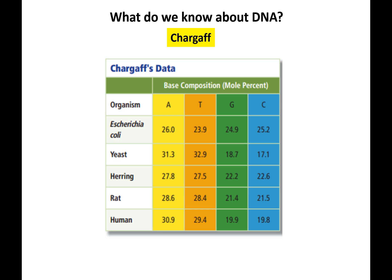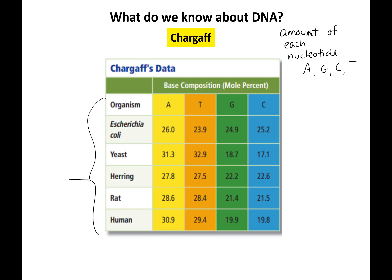With scientists now focused on DNA, Chargaff looked at the amounts of each nucleotide — A, G, C, and T — across a whole range of organisms including bacteria, yeast, herring, rat, and human. What he found was that the levels of A and T were very similar, and the levels of G and C were also similar — though A did not equal G or C.